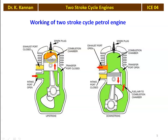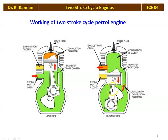When the piston reaches TDC, a spark is produced. Because of the spark, combustion takes place, gas pressure and temperature increase, and the piston moves downward. In the downward stroke, the intake port is closed, so the incoming air-fuel mixture is stopped. The fresh air-fuel mixture available in the crankcase is compressed because of the downward stroke.